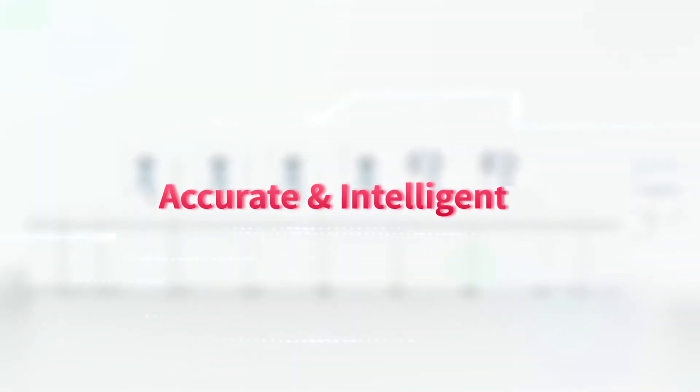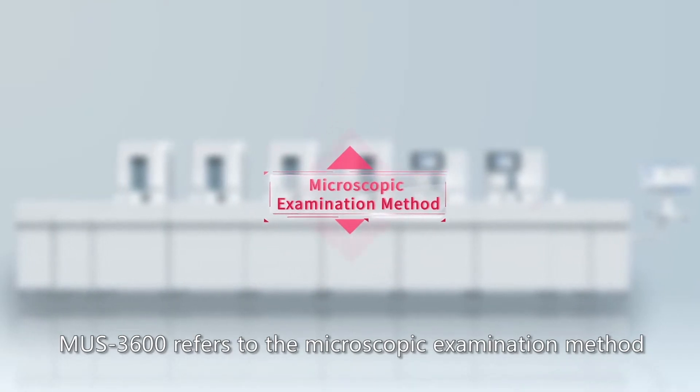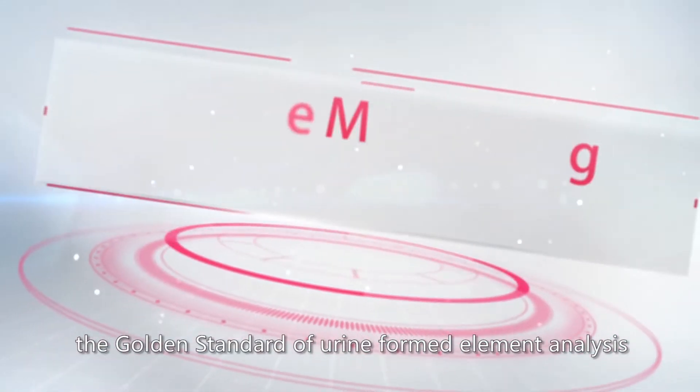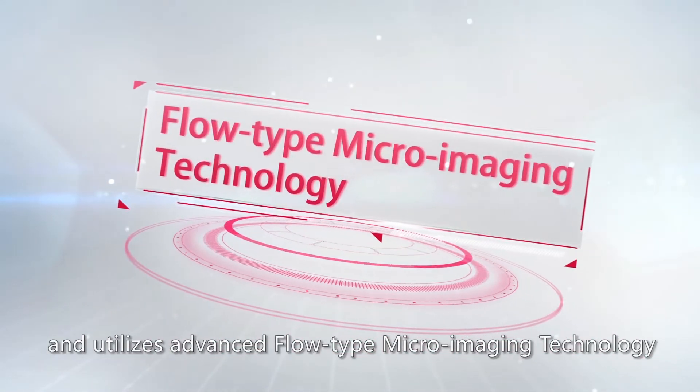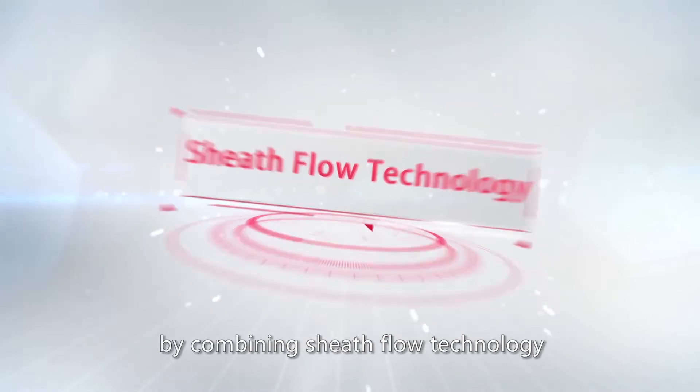MUS3600 refers to the microscopic examination method, the golden standard of urine-formed element analysis, and utilizes advanced flow-type micro-imaging technology by combining sheath flow technology.